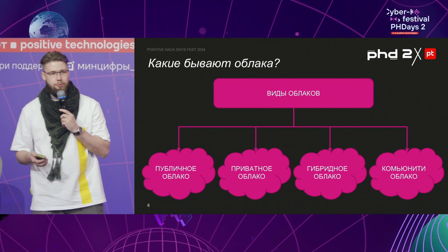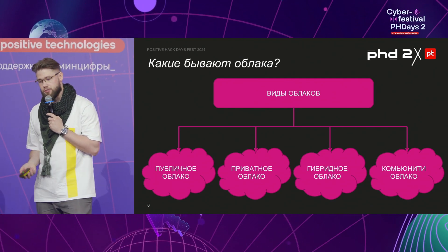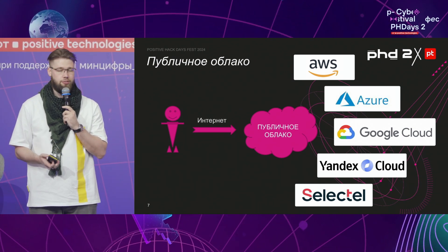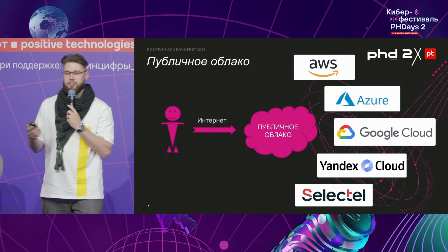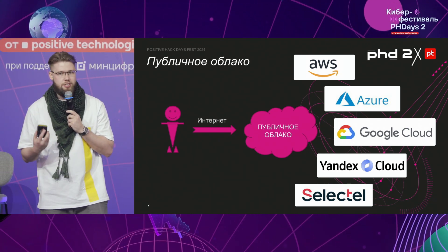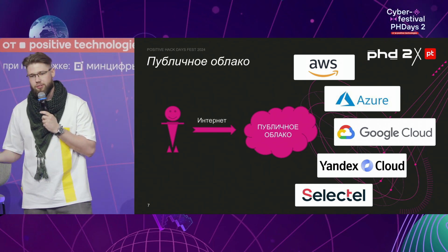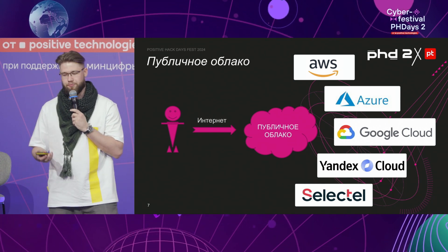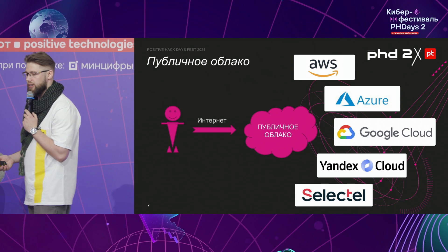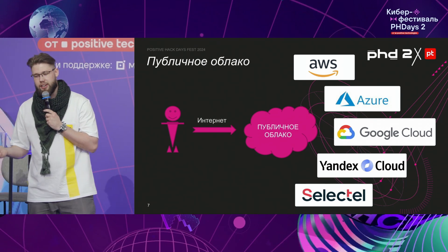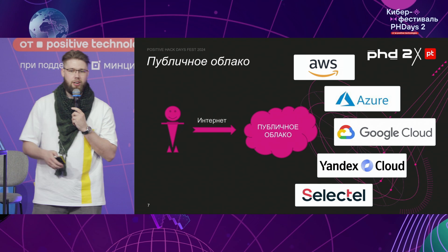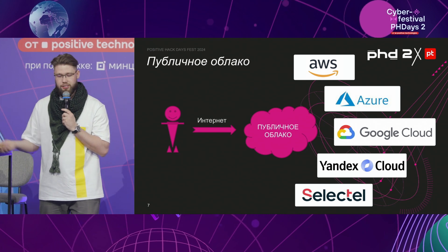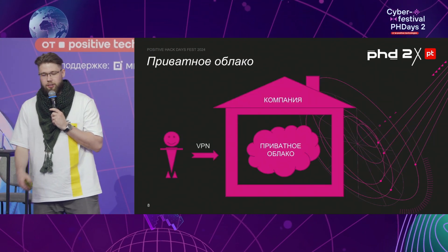What kinds of clouds do we have? A public cloud, a private cloud, a hybrid cloud, and a community cloud. The public cloud is the best known to IT people — it's the internet, and all the APIs are available while a person gets access and orders infrastructure. Examples include AWS, Azure, and Google Cloud. In Russia it's Yandex Cloud, and SberCloud as well.